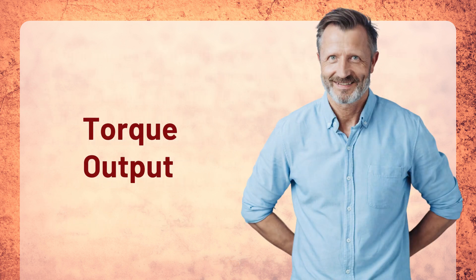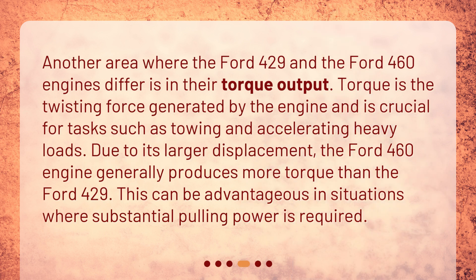Torque Output. Another area where the Ford 429 and the Ford 460 engines differ is in their torque output. Torque is the twisting force generated by the engine and is crucial for tasks such as towing and accelerating heavy loads. Due to its larger displacement, the Ford 460 engine generally produces more torque than the Ford 429. This can be advantageous in situations where substantial pulling power is required.